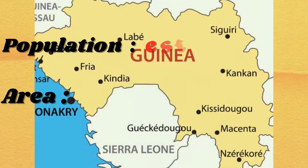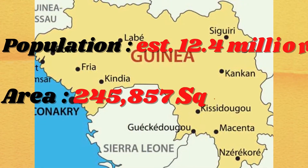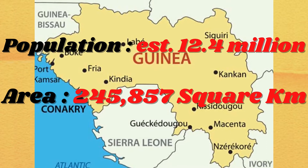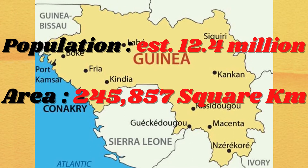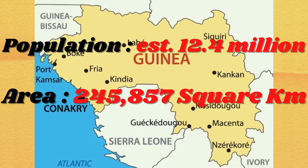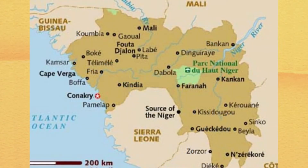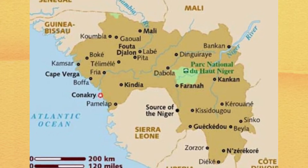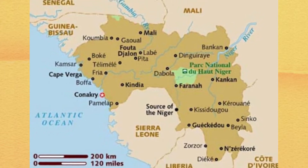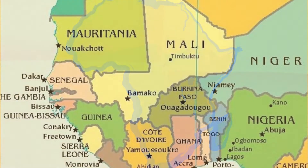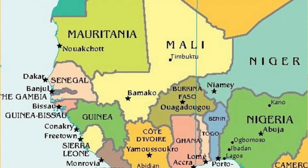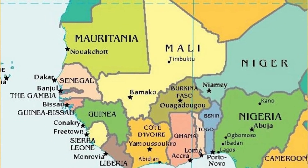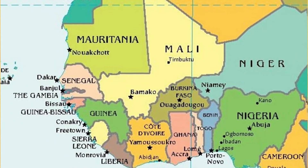Guinea has a population estimated at 12.4 million and an area of 245,857 square kilometers. There are 320 kilometers of coastline and a total land border of 3,400 kilometers. It lies mostly between latitude 7 degrees and 13 degrees north, and longitude 7 degrees and 15 degrees west.